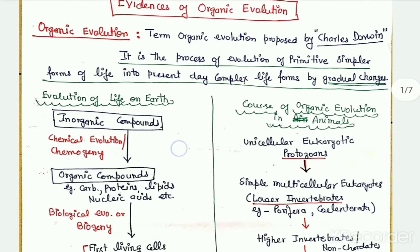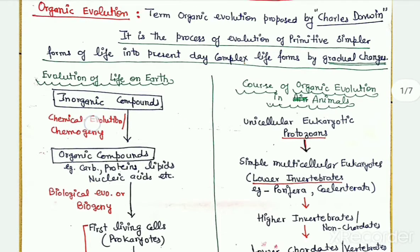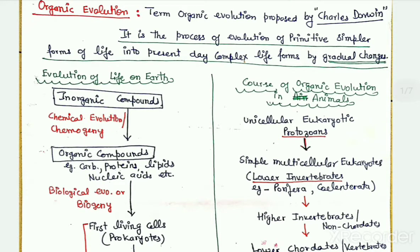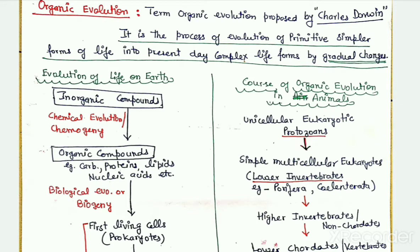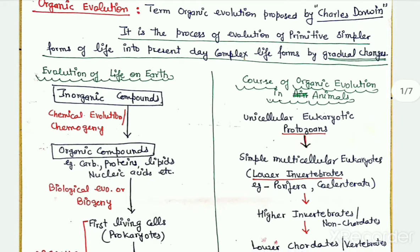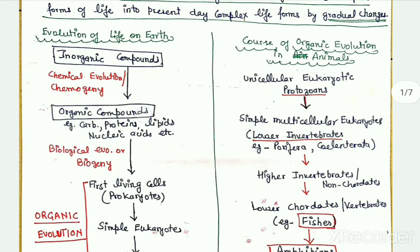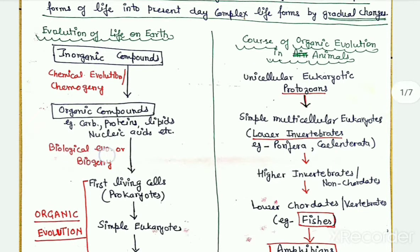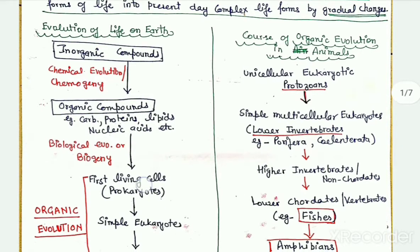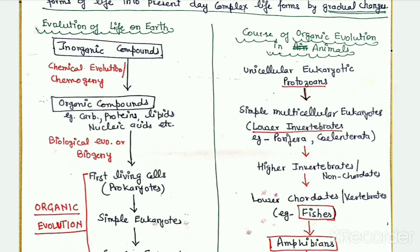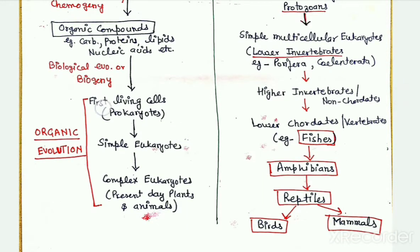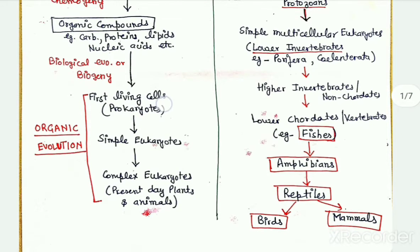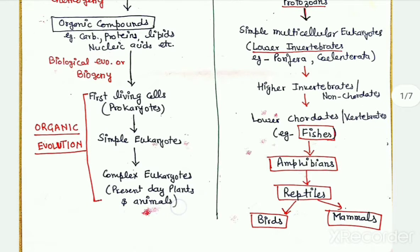From inorganic compounds, by the process of chemical evolution or chemogeny, the organic compounds like protein, carbohydrates, lipids, and nucleic acids were formed. And from organic compounds, by the process of biological evolution or biogeny, the first living cells in the form of prokaryotes were formed approximately 3500 million years ago. Since then, many complex plants and complex animals have been formed on earth.